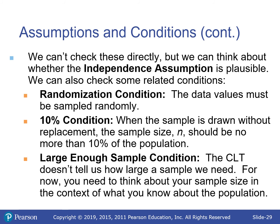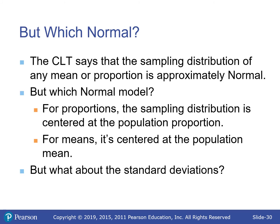The CLT says the sampling distribution of any mean or proportion is approximately normal — but which normal? For proportions, it's centered at the population proportion p. For means, it's centered at the population mean μ. For standard deviations: proportions use √(pq/n); for means, it's the standard deviation divided by √n.